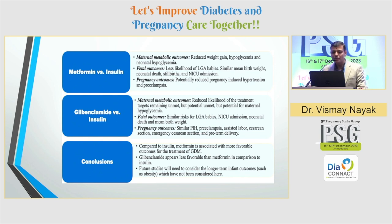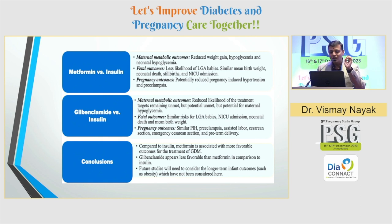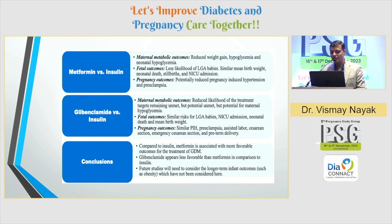What about glibenclamide versus insulin? Maternal metabolic outcomes showed reduced likelihood of treatment targets remaining unmet, which was higher in the metformin group. Fetal outcomes were similar for LGA babies, NICU admissions, and mean birth weight. Pregnancy outcomes were also similar for PIH, caesarean sections, and preeclampsia. Conclusion: compared to insulin, metformin is associated with more favorable outcomes for GDM treatment. Glibenclamide appears less favorable than metformin in comparison to insulin. Further studies are needed for long-term effects on babies.